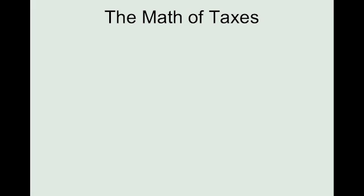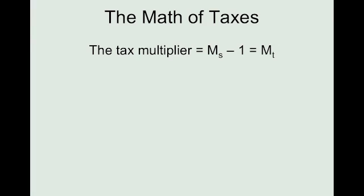Here's the tax multiplier. You did the spending multiplier to calculate the change in GDP from government spending. Now we're going to talk about the math when they do taxes. The tax multiplier is pretty easy to figure out — you take the spending multiplier and subtract one, because there's one less round of spending going on when you cut people's taxes. The formula is: the negative change in taxes times the tax multiplier equals the total change in GDP. In the spending version, it's change in government spending times the spending multiplier equals the change in GDP.